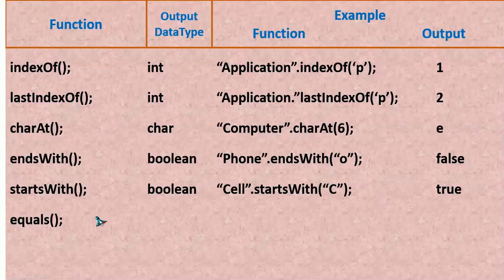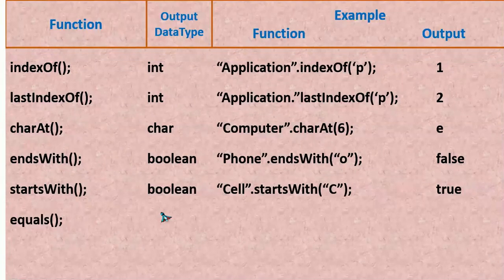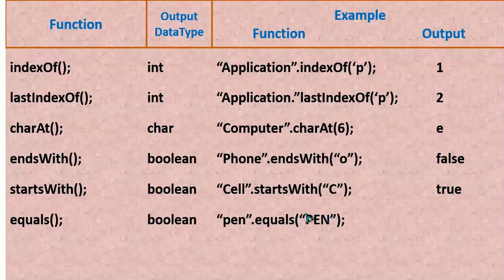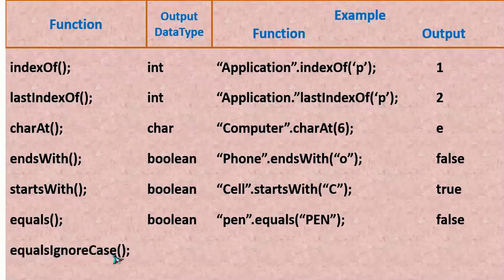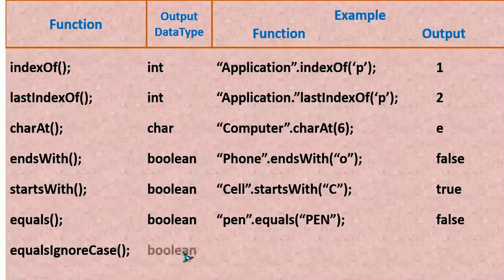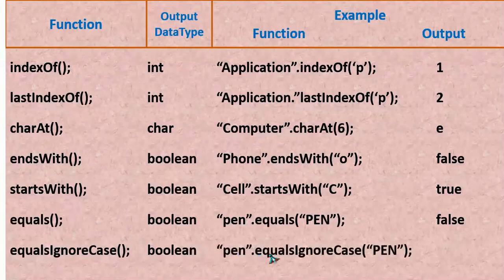Next we have equals(). This will check whether two given strings are equal or not and give the output as true or false — so again it is Boolean data type. We give the first string, then dot equals, and the second string inside the bracket. It is false because 'pen' is not equal to 'Pen' (capital P). Next we have equalsIgnoreCase(). It checks whether both strings are equal by ignoring case — whether upper or lower case is ignored. So "pen".equalsIgnoreCase("PEN") — both are equal if you ignore the case — it is going to be true.